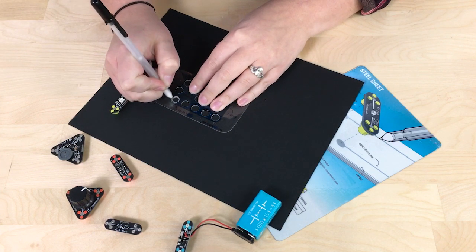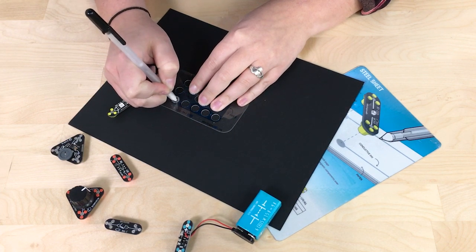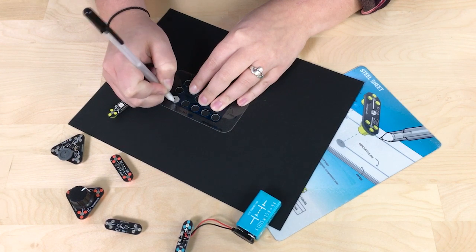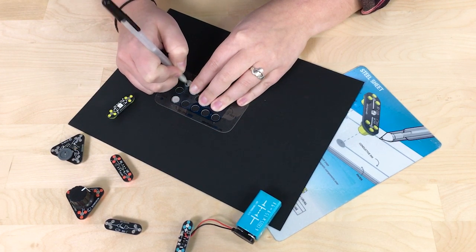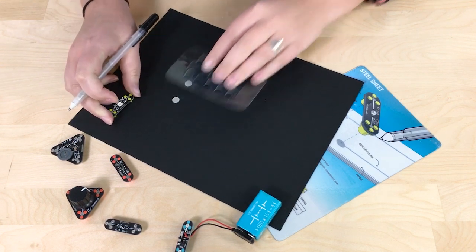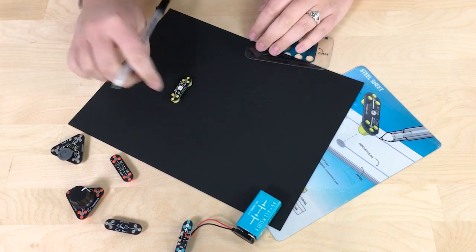So I'm going to use my CircuitScribe pen to fill those holes in completely. There we go. Now I have a place for my BiLED to land.